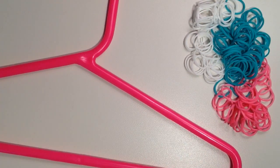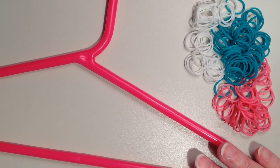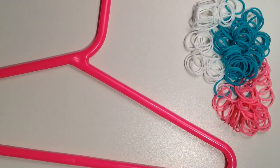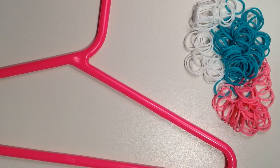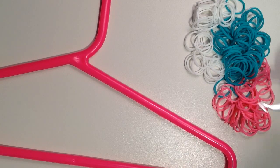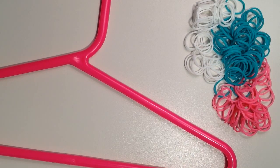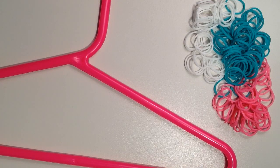All you're going to need to make this is your hanger. I am using a child size hanger in this tutorial. And then your rubber bands. I have Rainbow Loom brand white, teal and pink.